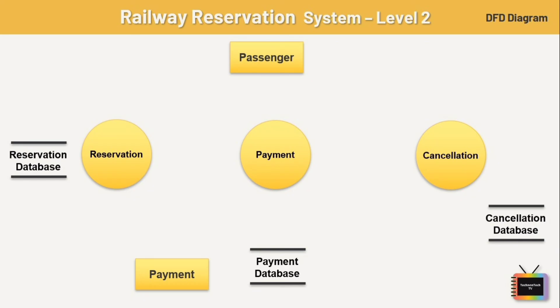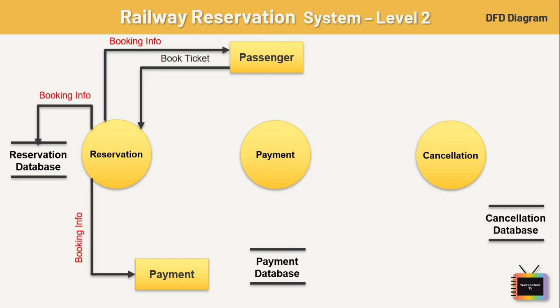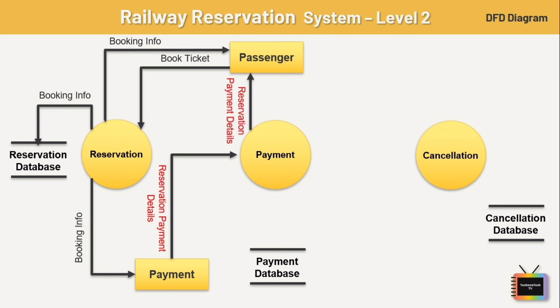Now let's see how data will flow in this diagram. First, the passenger books a ticket — booking information is sent to the reservation process and the payment entity, and the same information is stored in the reservation database. The payment entity then sends payment details of the reservation to the payment process, which sends the payment method to the passenger. Once the passenger receives the payment method, they complete the payment, and the payment information is stored in the payment database.